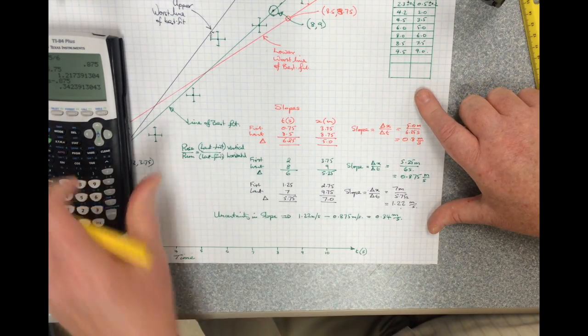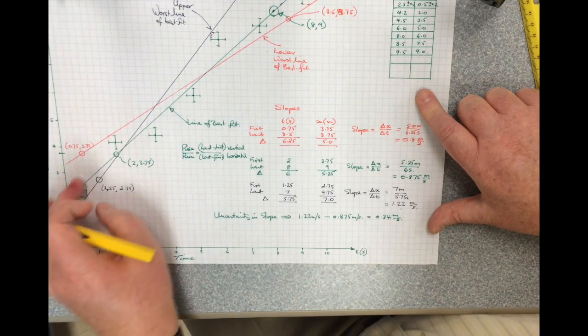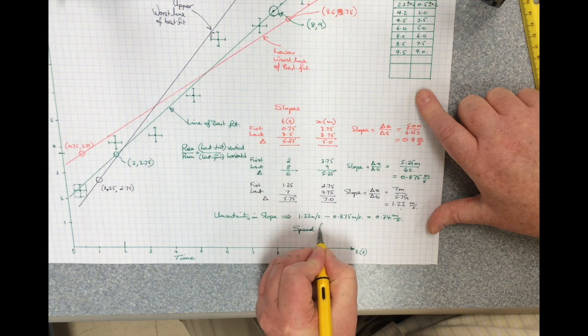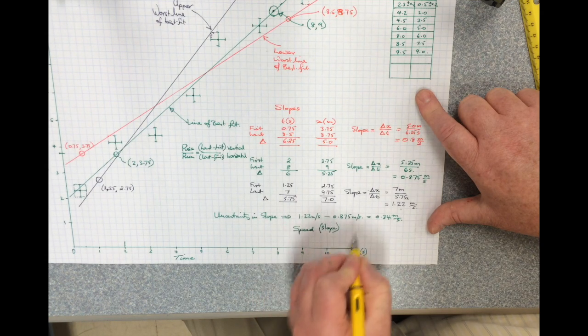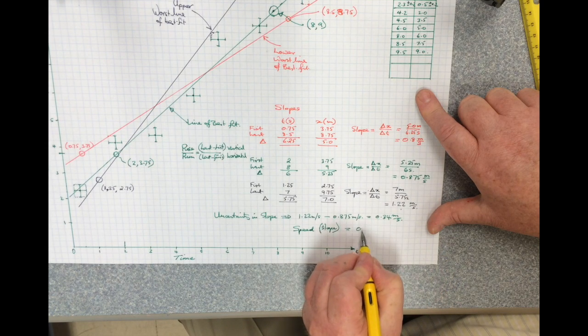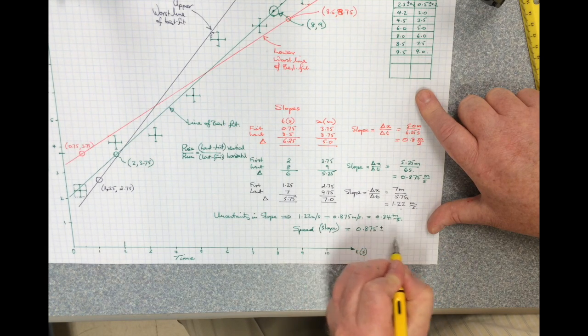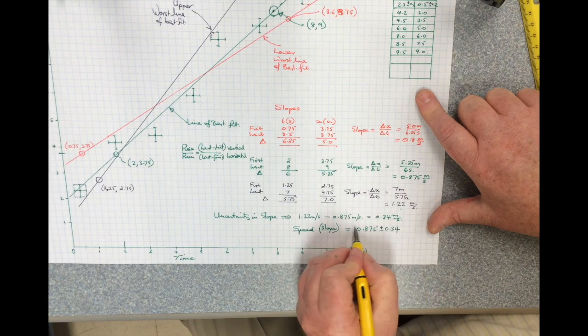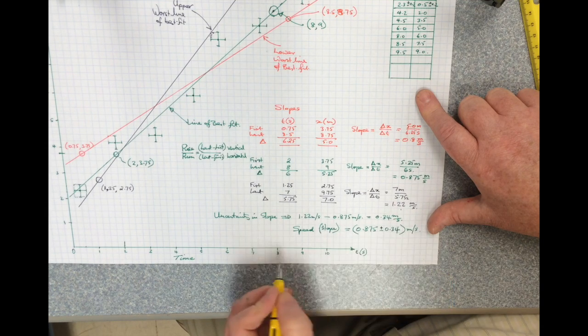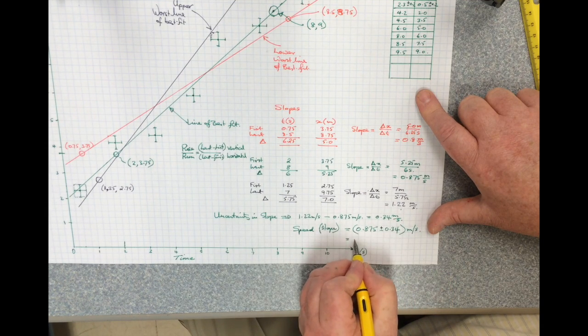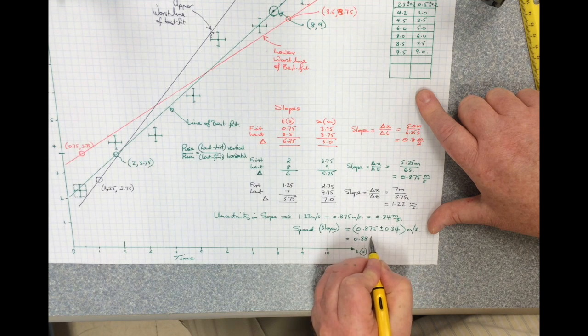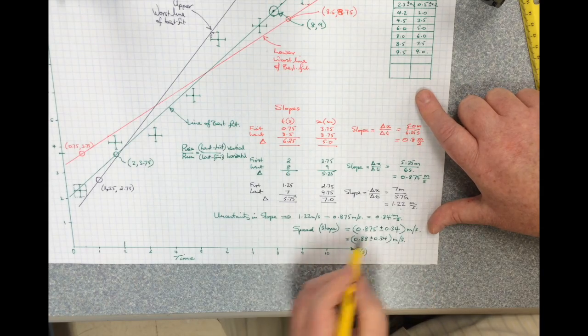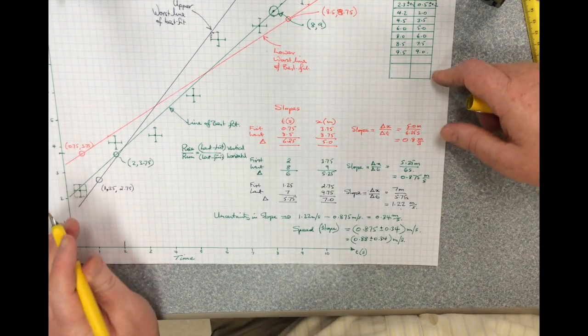So what we've got here in terms of the speed based on this set of data is a speed, which is in fact the slope of the line of best fit, equal to 0.875 plus or minus 0.34 meters per second. Now probably what I want to do here is actually make this 0.88 plus or minus 0.34 meters per second, so that we're consistent with the number of significant figures.